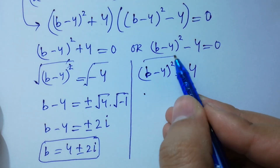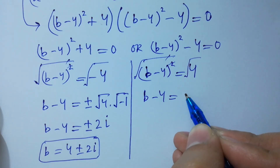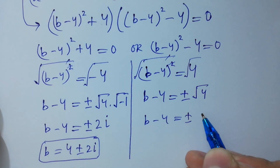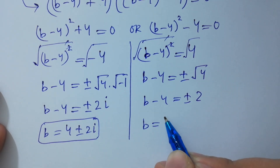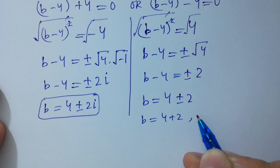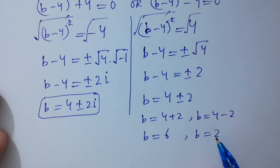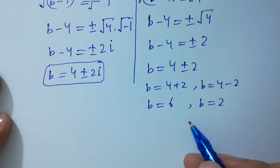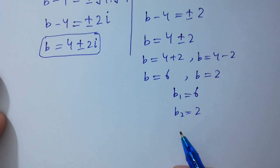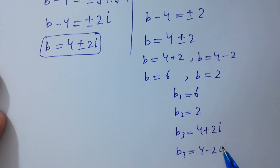Taking the square root on both sides of (b-4)² = 4, we get b-4 = ±2, so b = 4 ± 2. Therefore b is either 4+2 = 6 or 4-2 = 2. So the four solutions are: b₁ = 6, b₂ = 2, b₃ = 4+2i, and b₄ = 4-2i.